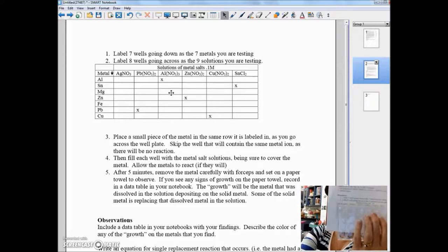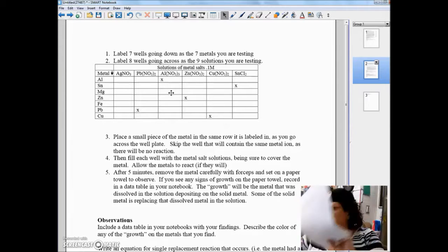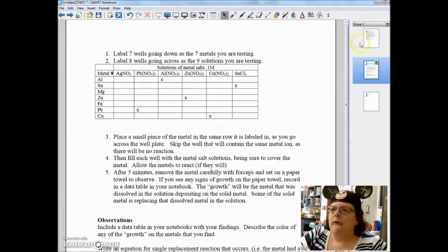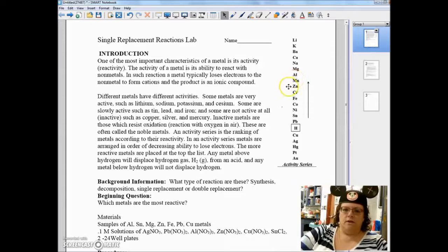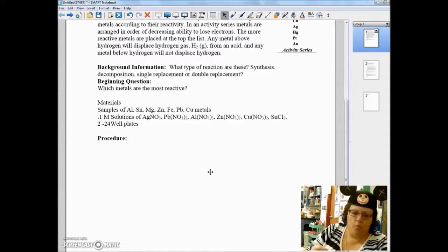Then going down, of course it's not the right size, you're going to need two of these because you have seven metals you're going to test and there's only four spots. So the first thing you need to do is label. And label your solutions going across and down.